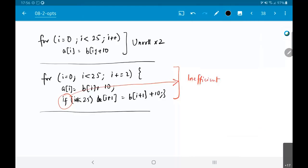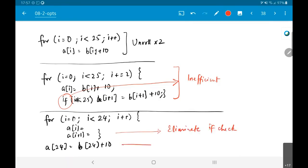Another way of doing it which avoids this is to say for i equal to 0, i less than 24, i plus plus, process a[i] and a[i+1], and then outside the loop, I do a[24] = b[24] + 10. So what this does is eliminate the if check, but add extra code. So it solves the problem by basically adding an extra piece of code.